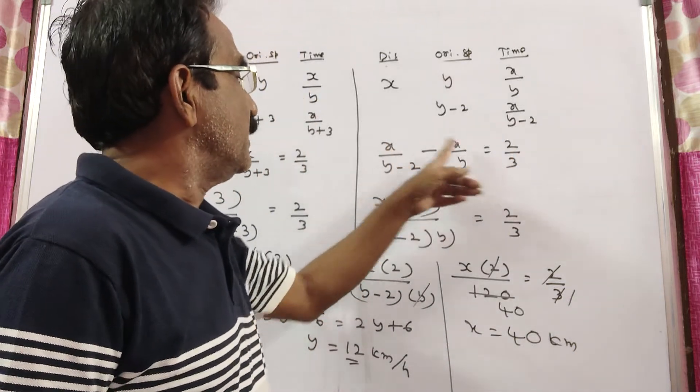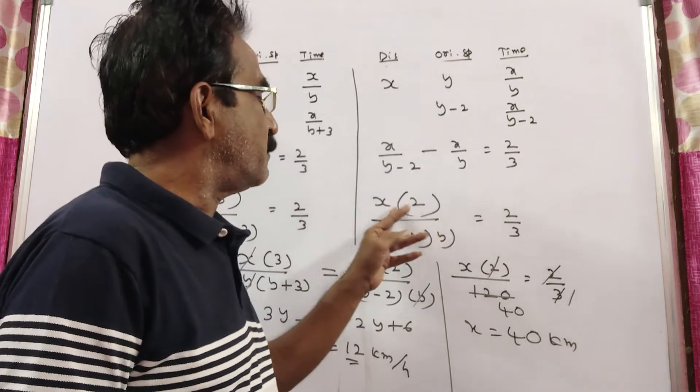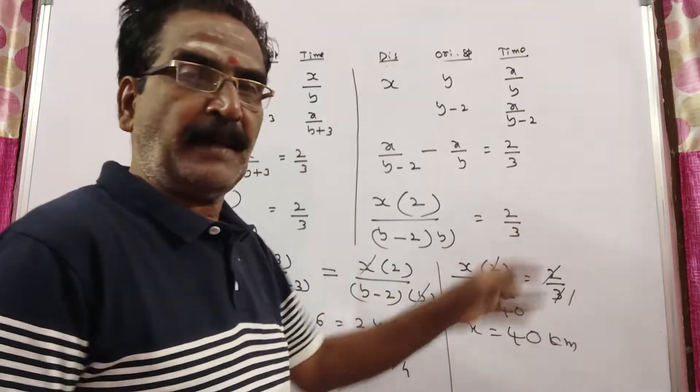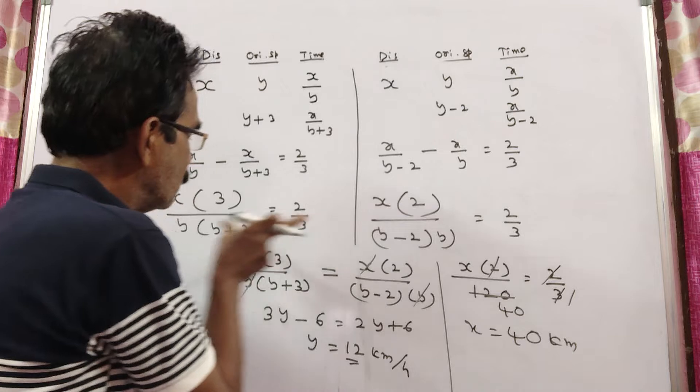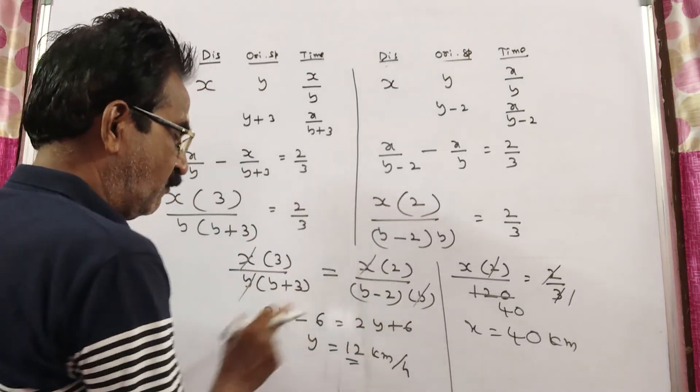So x into y minus y minus 2, which is 2 by y minus 2 into y, is equal to 2 by 3. Friends, this is 2 by 3 and this is also 2 by 3, so this and this are equal.